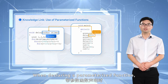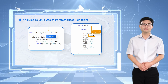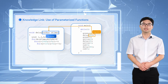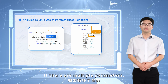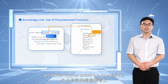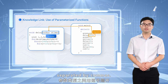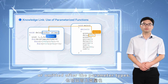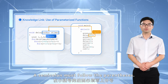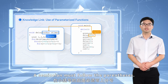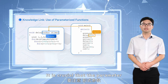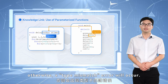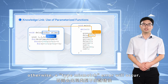When declaring a parameterized function, the parameter types must be listed within the parentheses. If there are multiple parameters, all their types must be specified, separated by commas. The variable names can be included or omitted after the parameter types. A semicolon must follow the parentheses. It is crucial that the parameter and the argument match in number, order, and type — otherwise, a type mismatch error will occur.